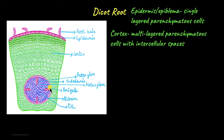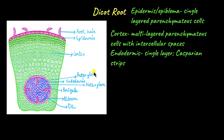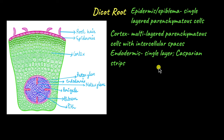The innermost layer of the cortex is called endodermis — 'endo' meaning inside. Endodermis is made up of barrel-shaped cells arranged with no intercellular space. The radial walls and the tangential walls of the endodermis are covered with waxy suberin deposited in the form of casparian strips. These strips are impermeable to water and restrict the flow of water and ions within the cell.